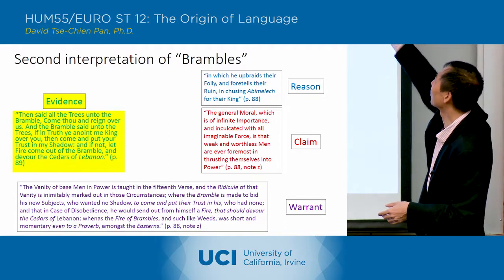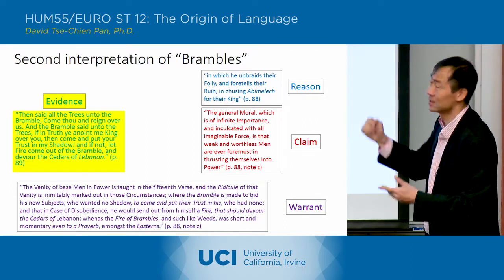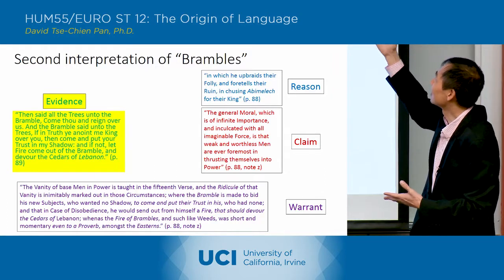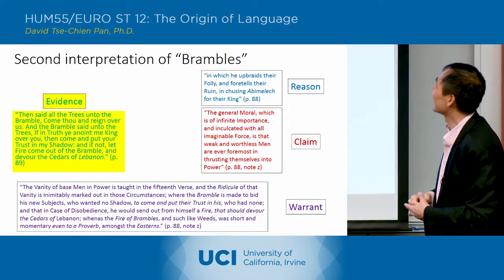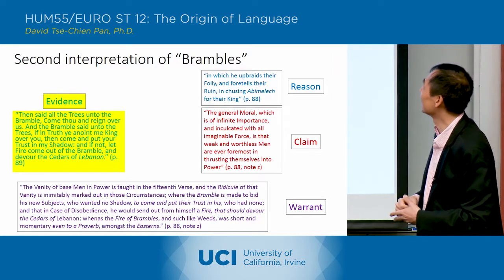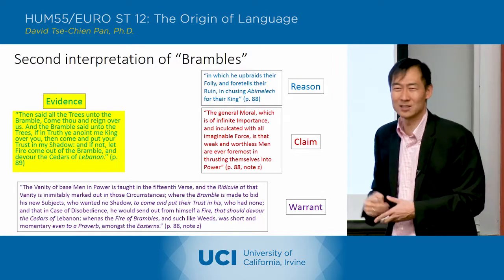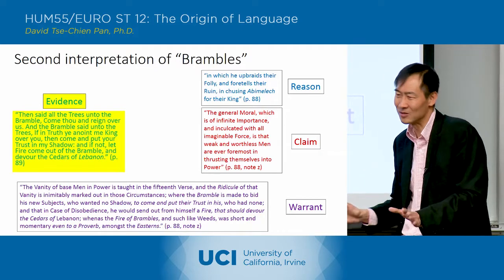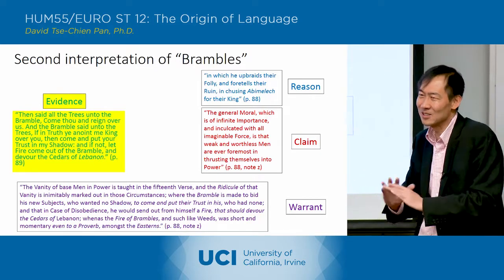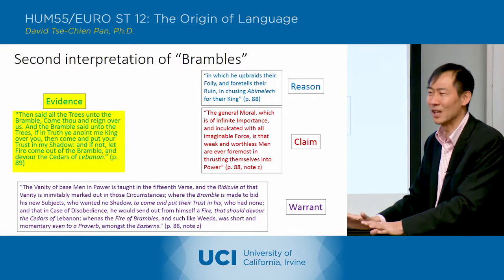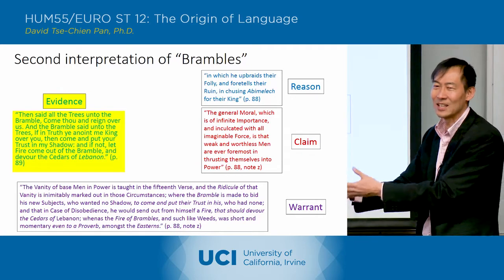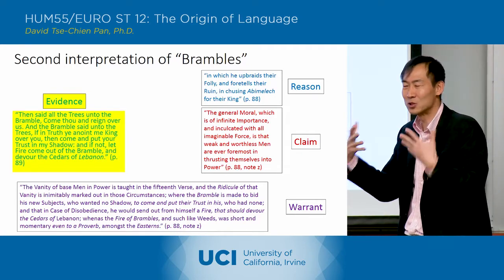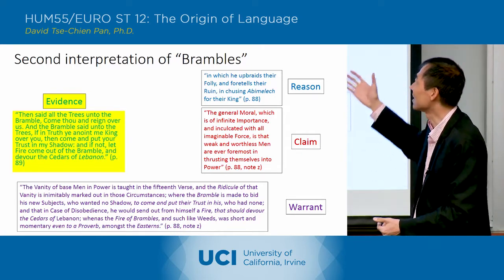In the footnote he says the general moral of the story about the trees and the brambles — 'which is of infinite importance and inculcated with all imaginable force' — is that 'weak and worthless men are ever foremost in thrusting themselves into power.' That's the moral of the story. The reason he gives was in the main text: he upbraids their folly and foretells their ruin in choosing Abimelech for their king, because Abimelech was a horrible king — kind of like having the brambles be king of the trees.